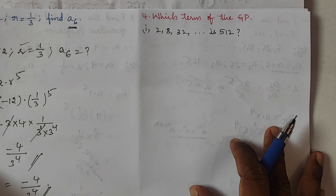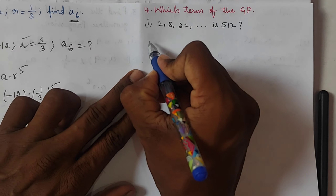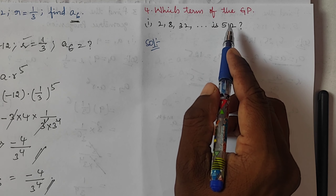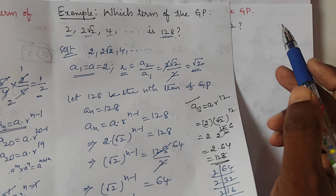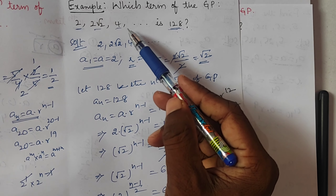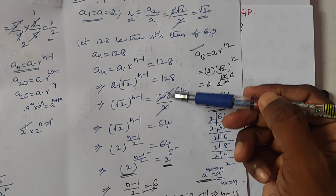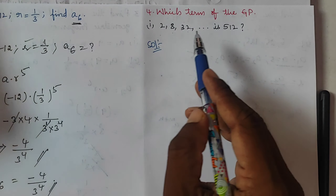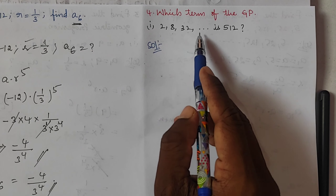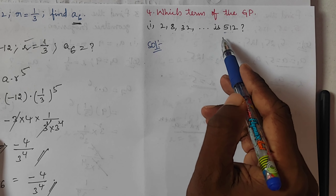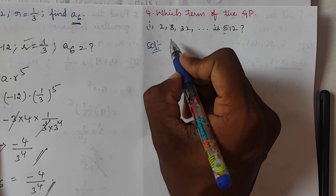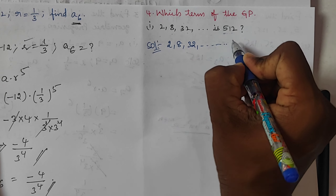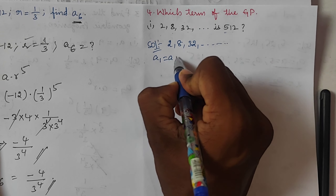Exercise 6.5, Question 4, Part 1: Which term of the GP 2, 8, 32, ... is 512? Given GP: 2, 8, 32, ... First term a = 2. Common ratio r = 8/2 = 4. Let 512 be the nth term of the GP.